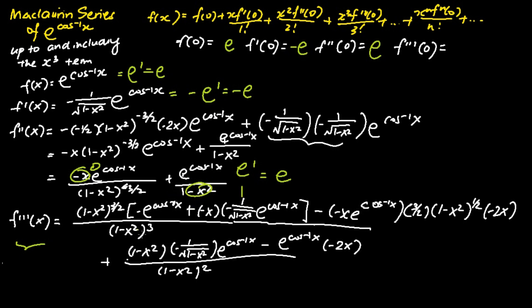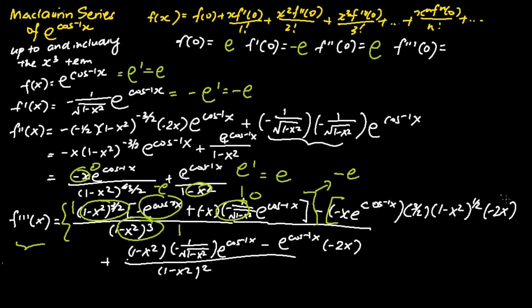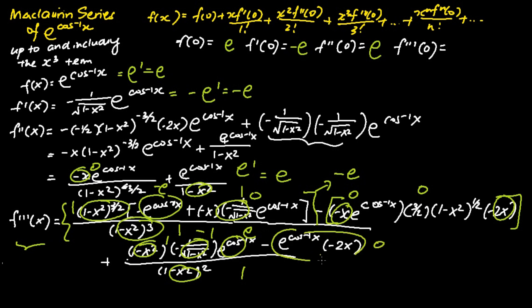For f'''(0), substituting x equals 0 into f'''(x): the denominator is 1. In the numerator, the first part evaluates to 1, the second part to negative e, and the third part to 0 — so the first term of f'''(x) contributes negative e. For the second term, the denominator is 1; the numerator has 1 minus x squared giving 1, multiplied by negative 1 times e, with the remaining part equal to 0 — so the second term also contributes negative e. Therefore f'''(0) equals negative e minus negative e, which is negative 2e.